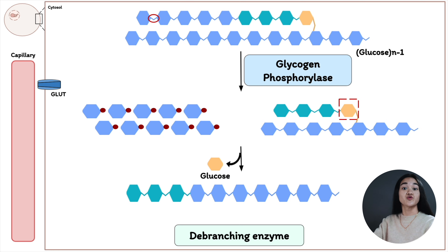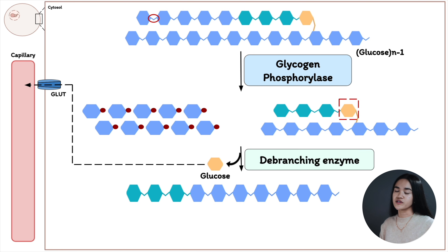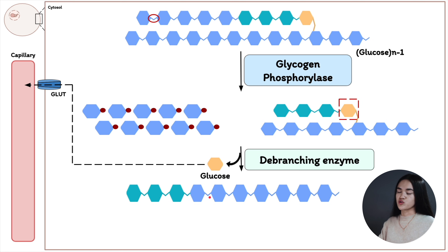This free glucose leaves the cell and enters the bloodstream to increase blood glucose concentration, which is our objective. Meanwhile, glycogen phosphorylase continues its activity on the remaining polymer, adding phosphate groups and breaking more alpha 1-4 linkages to produce additional glucose-1-phosphate molecules.